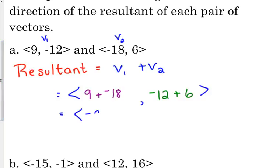So we get negative 9, negative 6 as the resultant. What quadrant is that resultant vector in? The third, because it's negative x, negative y, that is quadrant 3.